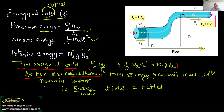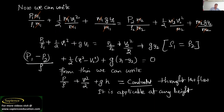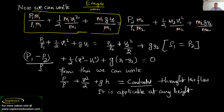As per Bernoulli's theorem, total energy per unit mass remains constant — meaning energy divided by mass at inlet equals energy divided by mass at outlet. So dividing by mass: at inlet we get P1/rho1 + half·v1² + g·y1, and at outlet P2/rho2 + half·v2² + g·y2, because m1 cancels with m2 since mass is conserved.